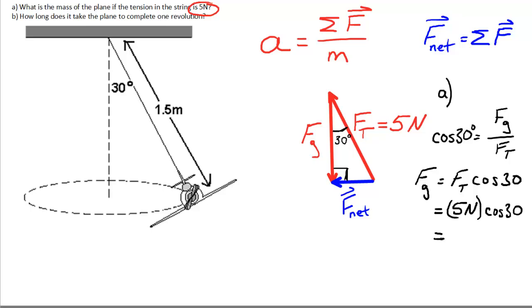F_t is 5 newtons. And if we solve this, 5 newtons times cos 30 is 4.33 newtons.